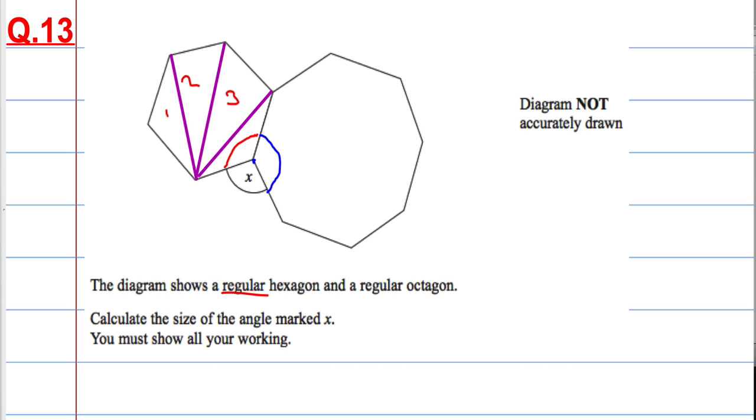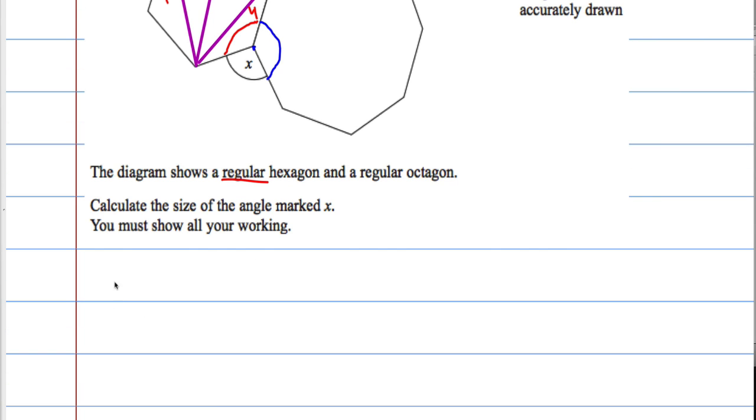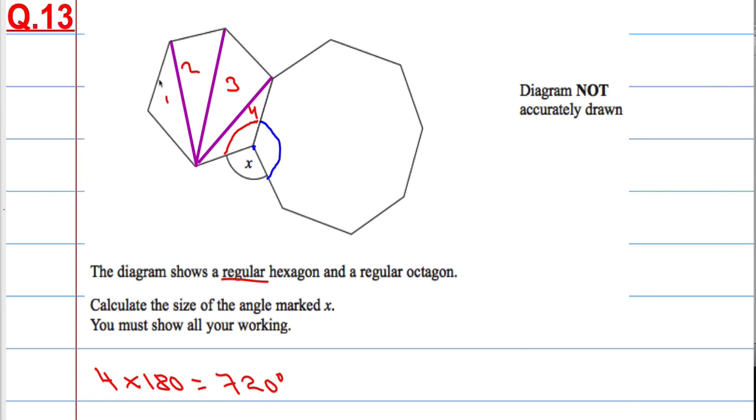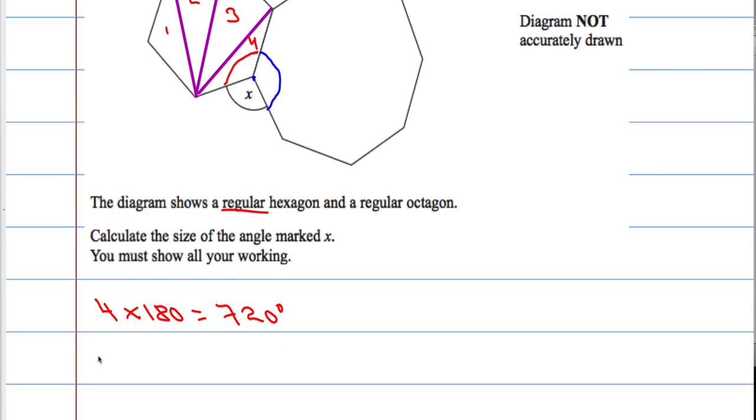So I can see that there are four triangles: one, two, three, four triangles in this shape. Each triangle has 180 degrees, so there's going to be four lots of 180 degrees within that shape. Four times 180 is 720 degrees. So 720 degrees in the whole shape, all the angles are the same, there are six of them.